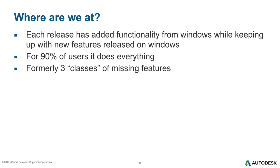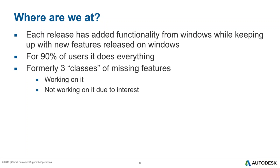A couple of years back, Autodesk categorized missing features into three classes: features they were actively working on, features not being worked on due to lack of interest, and features limited by the operating system itself — things like .NET and VBA, which are Windows-based and just won't work in the Mac environment.